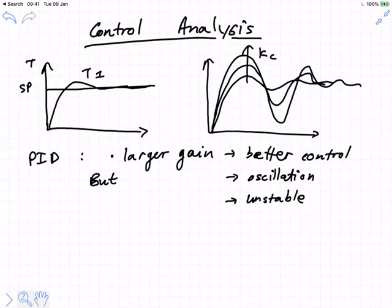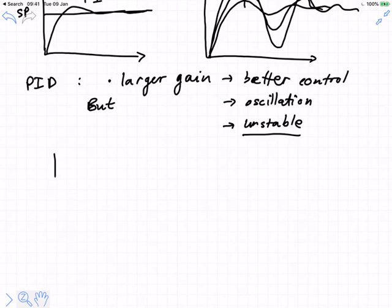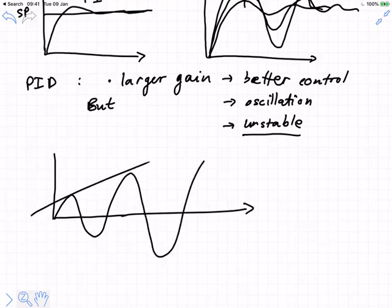It turns out that there are undesirable values for the controller parameters. If we're just focusing on PID control first, we have interesting questions. We saw that in general, larger gain is associated with better control, but it is also associated with oscillation, and very large gains are often associated with unstable responses. This is an unstable response mathematically.